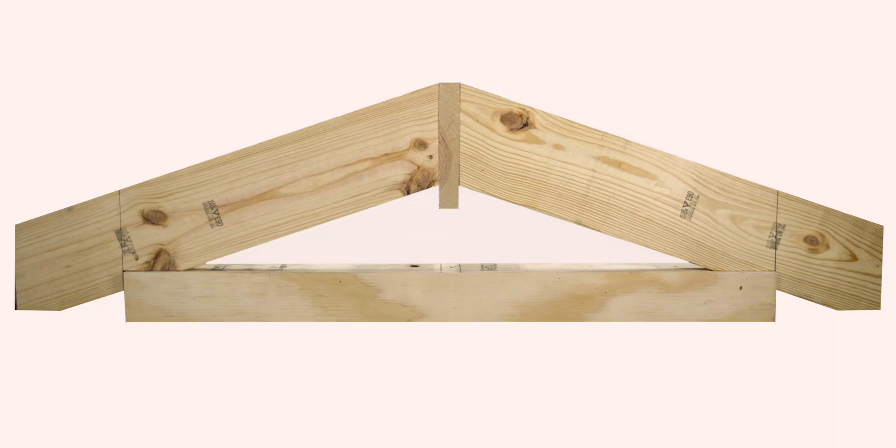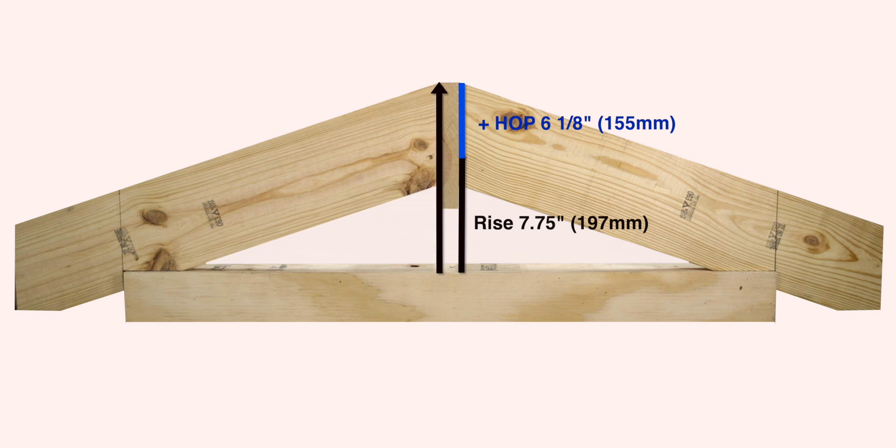Therefore, if we add the rise of 7.75 inches with the height above plate of 6 1/8, we get a total roof height of 13 and 7/8. And now you can see by using a framing square and those two simple equations, you too can build your very own common rafter roof.